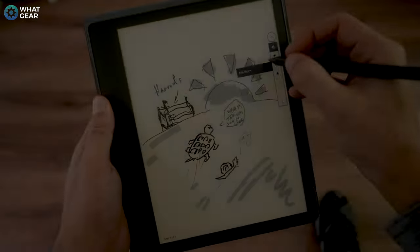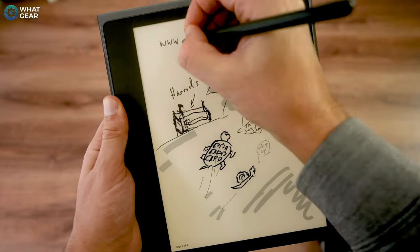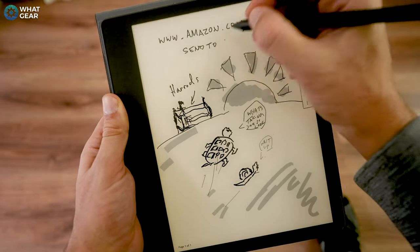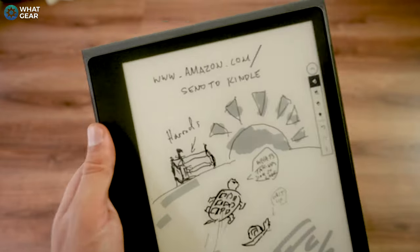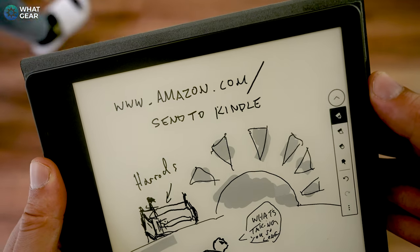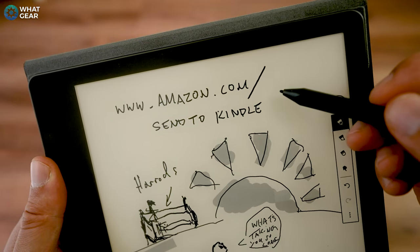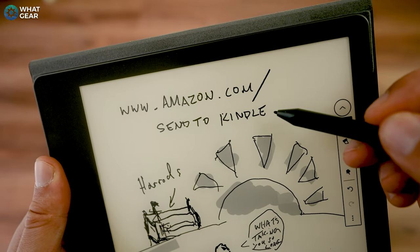So one new age old problem is signing PDFs digitally. This is something I have to do quite often and the Kindle scribe actually makes this process of hand signing documents much easier. So I do think this is going to be useful for you too. So write this down. Go to amazon.com forward slash send to Kindle.